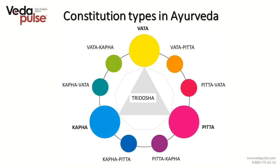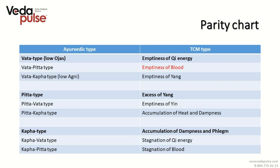The tenth type is called tridosh, known as a balance of all three doshas in an individual, meaning doshas have harmonized relationships with each other and give a proper response to the surrounding environment. This is a chart of matching constitution types or syndromes in Ayurveda and Chinese medicine. In the Vata-Pitta type you can see the syndromes already discussed, and today it is emptiness of blood.